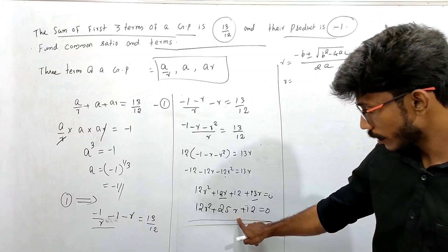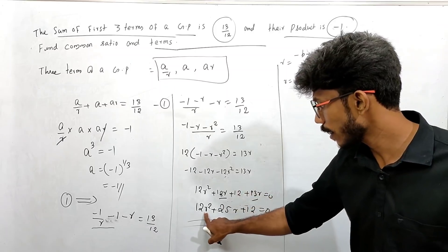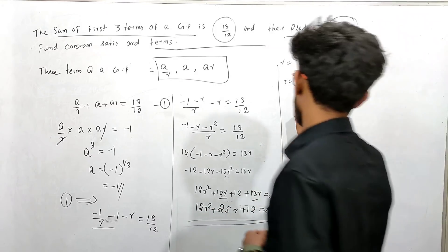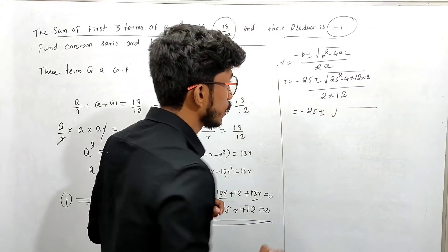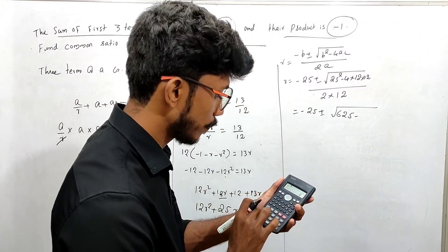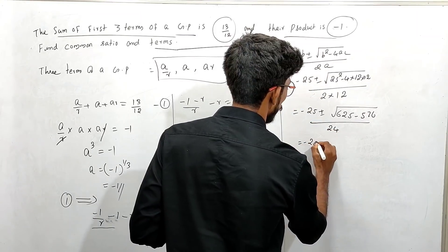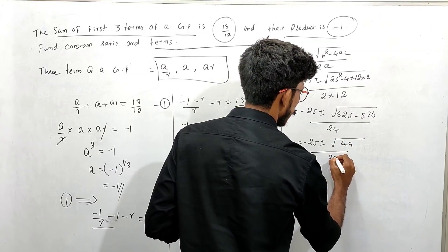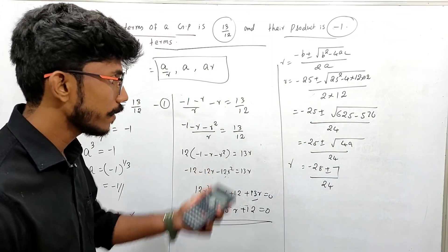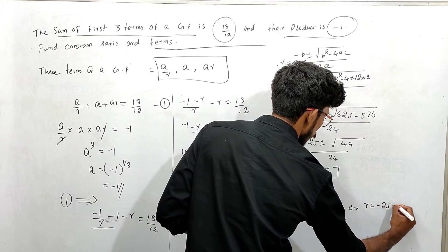So R equals minus b plus or minus root of b squared minus 4ac divided by 2a. That gives: minus 25 plus or minus root of 25 squared minus 4 times 12 times 12, all divided by 24. 25 squared is 625. Minus 4 times 144 equals minus 576. So root of 625 minus 576 equals root of 49 equals 7. So R equals minus 25 plus or minus 7, divided by 24.